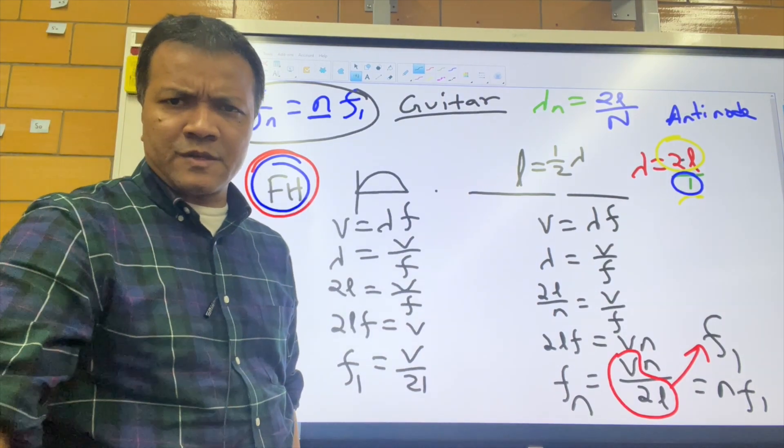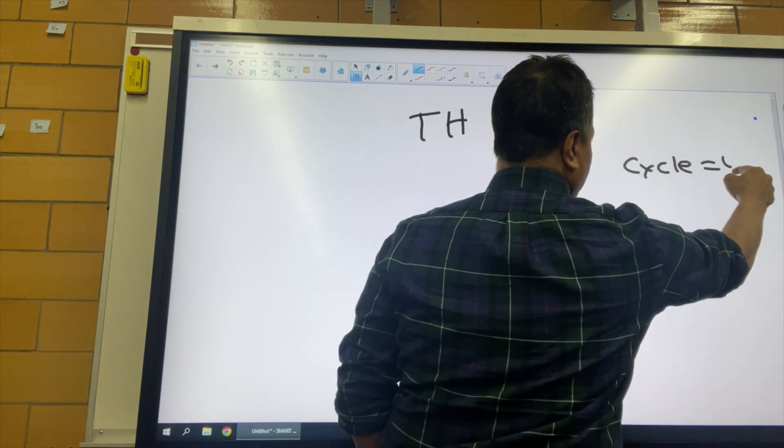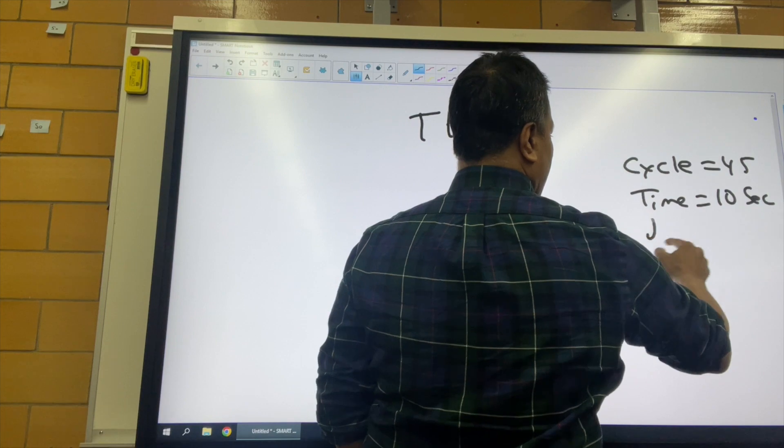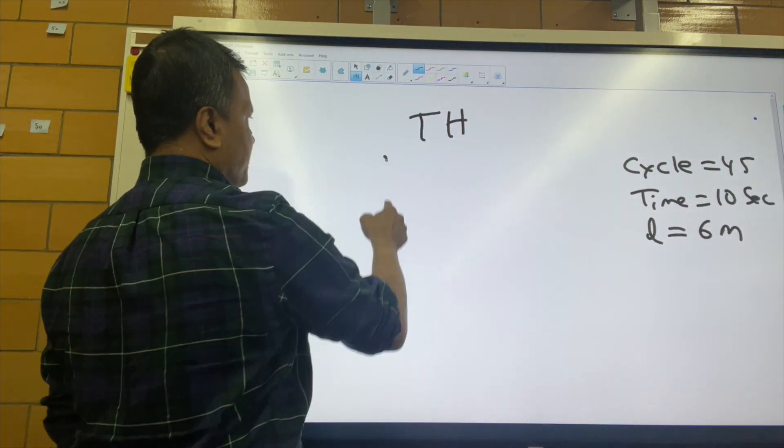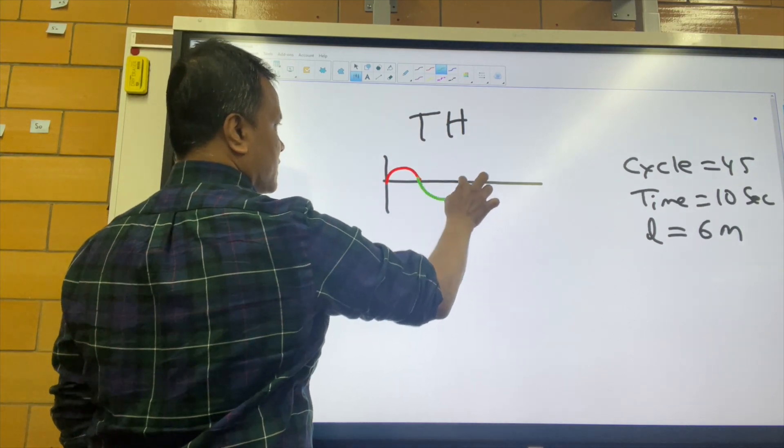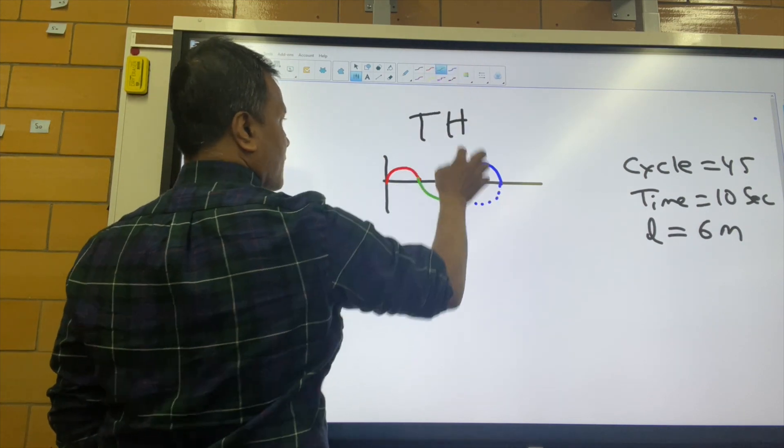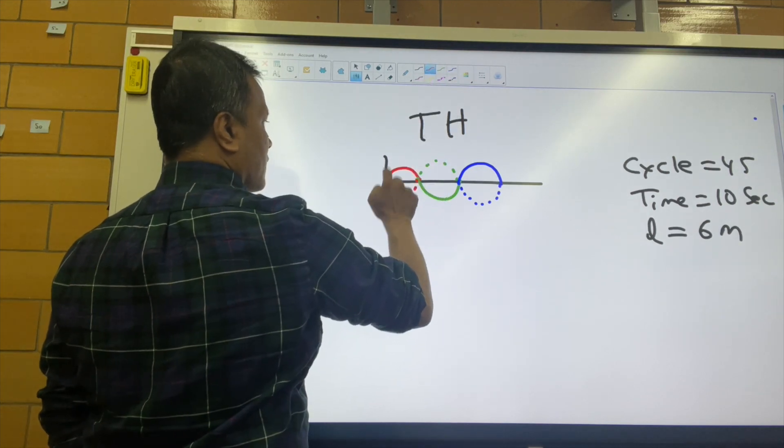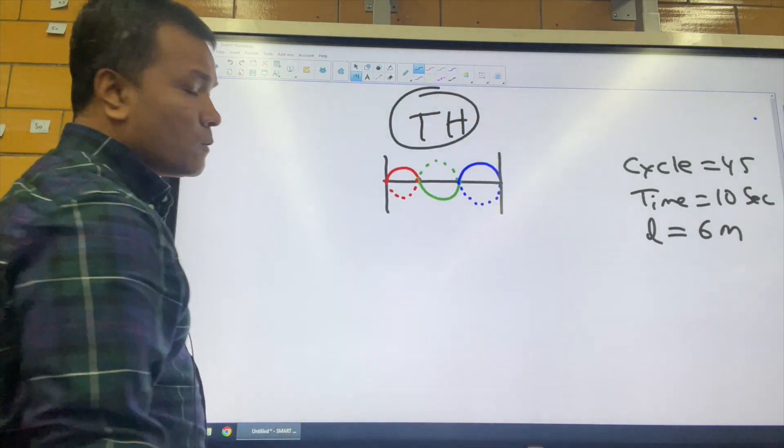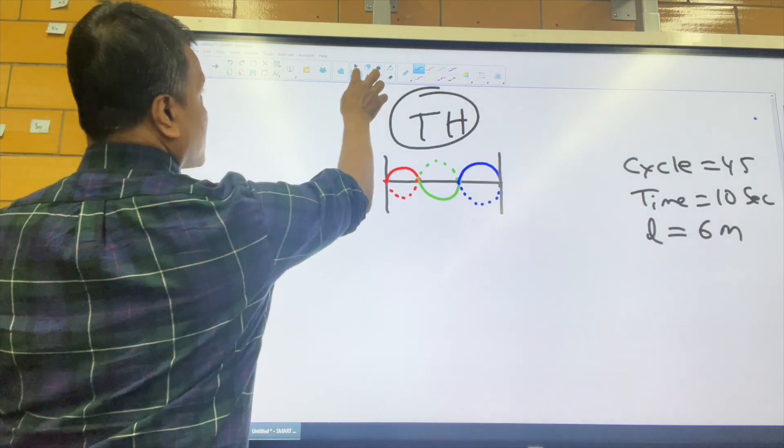Let's draw the third harmonic. This is the first harmonic, this is the second harmonic, and this is the third harmonic. There should be a barrier. This is the standing wave with third harmonic. What are we going to find? Frequency.